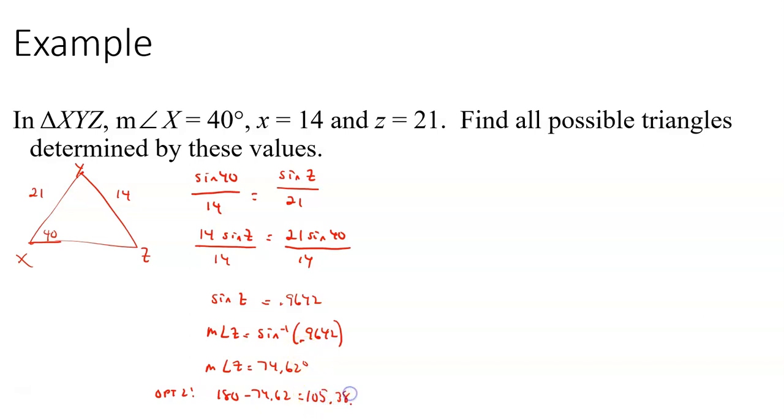Now, is that reasonable? Well, the angle that was given was 40 degrees. So if I take 105.38 and add it to 40 degrees, I get an angle measure that's less than 180. So that means that both of those triangles exist. So let's take a look at each of those triangles and find missing sides and missing angles.